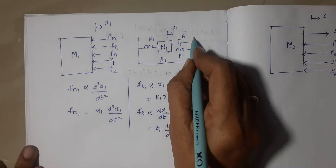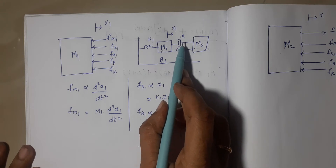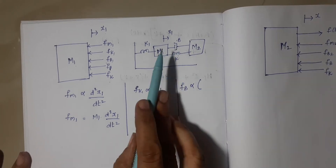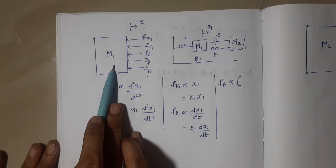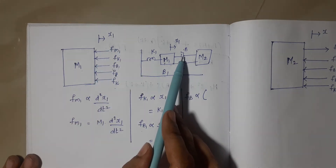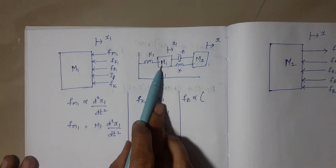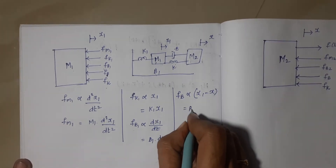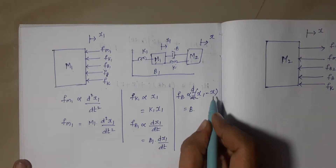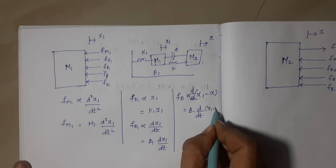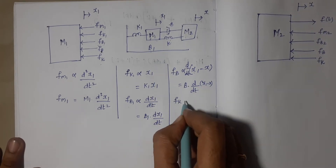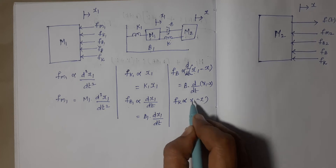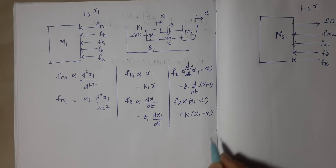Listen carefully: element b is connected between masses m1 and m2. When we consider the force produced by b while drawing the free body diagram of m1, fb is directly proportional to d/dt of (x1 − x), since m1's displacement comes first. With the proportionality constant, this becomes b·(d/dt)(x1 − x). Similarly, since k is connected between two elements, its force is directly proportional to (x1 − x), giving fk = k·(x1 − x).